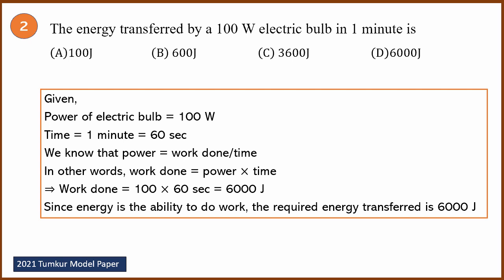Power equals work done divided by time — that is the definition of power. You can find work done by multiplying time with power. Power is 100 watt, time is 60 seconds. Multiply these two: you get 6000 joule. Since energy is the ability to do work, the energy transferred is 6000 joule. So the answer is D.